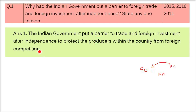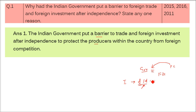The reason was to protect the producers within the country from foreign competition. When we got independence, our farmers and our industries were just starting out because of the turmoil we had endured for over 200 years under British rule. We were not very advanced in the fields of science, agriculture, or industry. So the government chose to allow Indian industries and Indian farmers to prosper and make their mark, so they would be well enough equipped to compete with foreign goods. That is why they put the barrier.